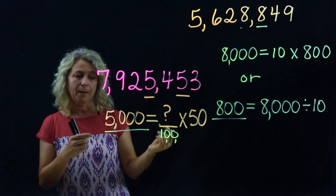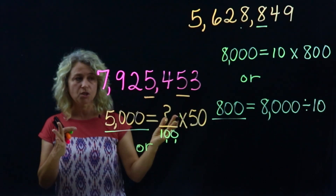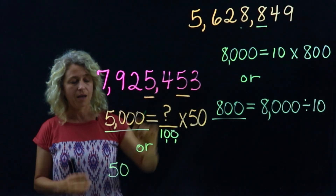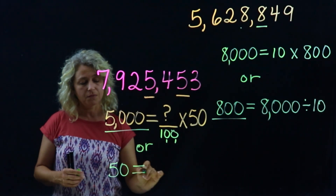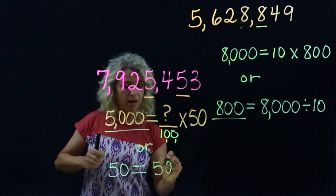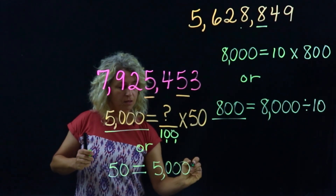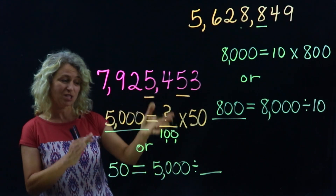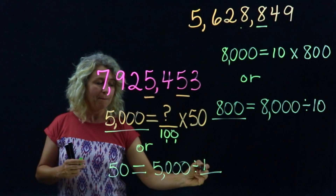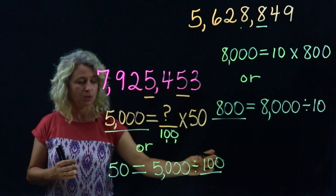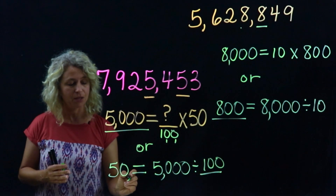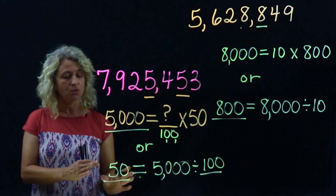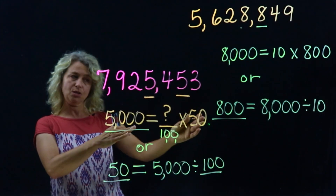You can also do this with division. You can say fifty is five thousand divided by one hundred. If you divide by one hundred, you take away two zeros, and you get fifty. So it works out whether you're adding two zeros or taking away two zeros.